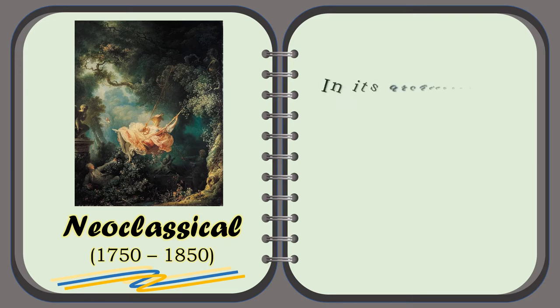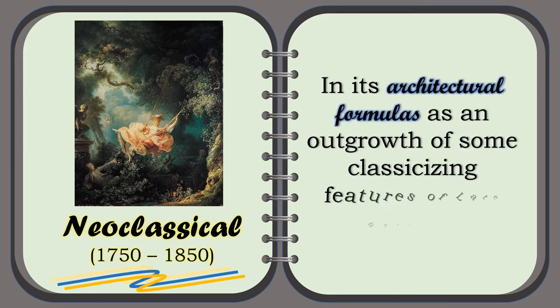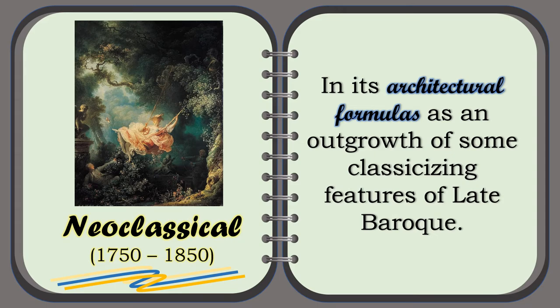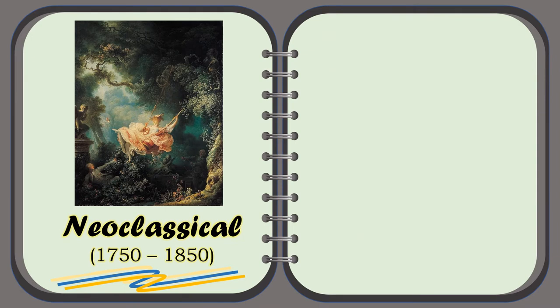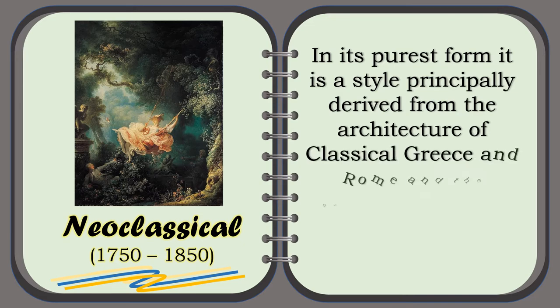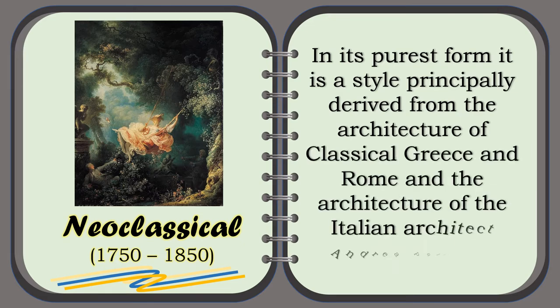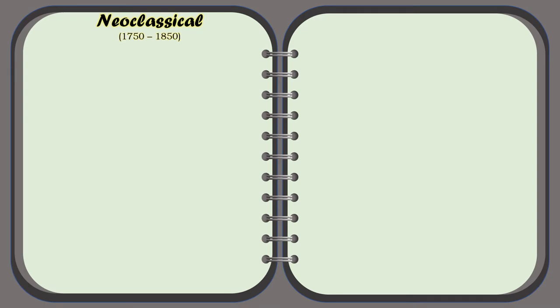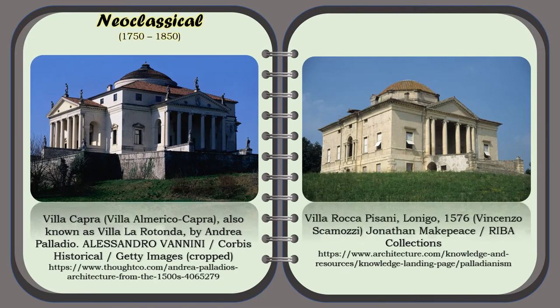In its architectural formulas, as an outgrowth of some classicizing features of late Baroque, and in its purest form, it is a style principally derived from the architecture of classical Greece and Rome, and the architecture of the Italian architect Andrea Palladio. For example, the Villa Capra, also known as Villa La Rotonda, and the Villa Rocca Pisani, Lonigo, in 1576.